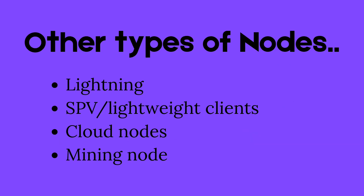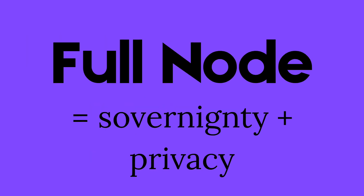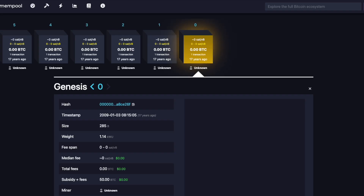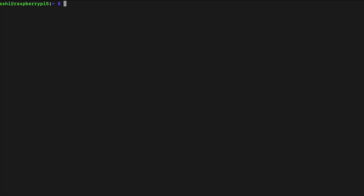There are several kinds of nodes on the Bitcoin network, but in this video we're focusing on full nodes, because that's where the real sovereignty and privacy come from. A full node will download and verify every block and transaction from the beginning of the Genesis block. Nodes will talk to other nodes, constantly checking and balancing data to form the decentralized network that enforces Bitcoin's rules.